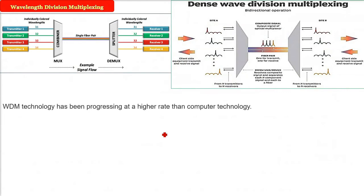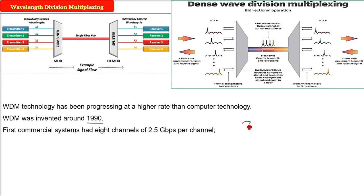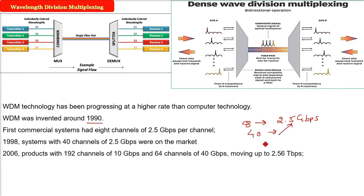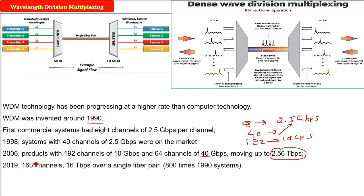So, wavelength division multiplexing, WDM, this technology is advancing more than computer technology because WDM was invented around 1990. First commercial system, it had 8 channels, even every channel giving 2.5 Gbps speed. 1998, there were systems with 40 channels, each channels providing 2.5 Gbps. 2006 product with 192 channels of 10 Gbps and 64 channels of 40 Gbps and they are giving speed up to 2.56 Tbps. Coming to 2019, 160 channels 16 Tbps over a single fiber pair and this is 800 times the systems that were there in 1990.